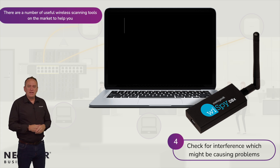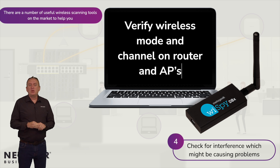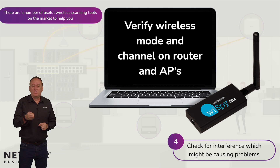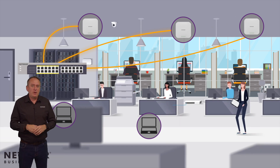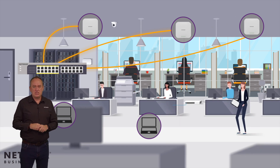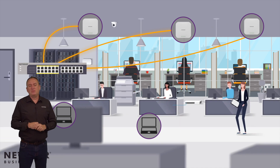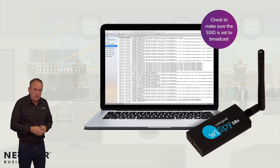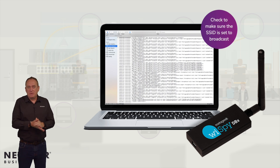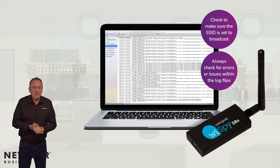Verify the router and access point configuration is using the same correct wireless mode and channel. Commercial offices can often be subject to many other offices around them using the same channel, and that can affect signal especially if the neighbours have ramped up the power and signal bandwidth of each access point in an attempt to dominate the wireless space around them. Check to make sure the SSID is set to broadcast — it is possible to prevent this for security purposes. And always check for any errors or issues within the log files which may help you identify the problem.